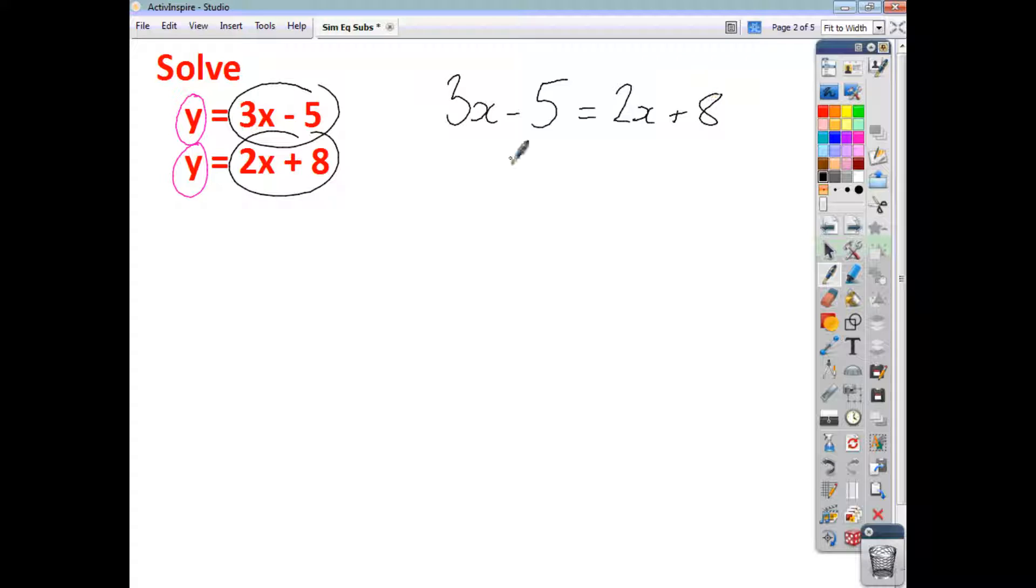Now, if I take all the x's over to this side, if I take 2x away from both sides, I end up with x minus 5 on the left-hand side, and they cancel out, leaving me with 8 on the right. Add 5 to both sides, I end up then with x being equal to 13.